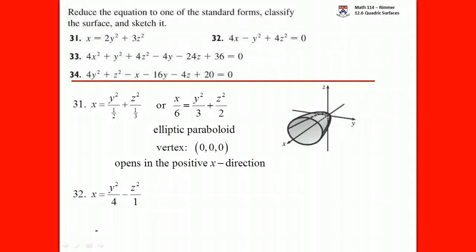In question 32, the same kind of idea applies — it's already set equal to zero. The difference between 31 and 32 is that there's a minus instead of a plus between the squared terms. The plus gives a paraboloid; the minus gives a different type of paraboloid.